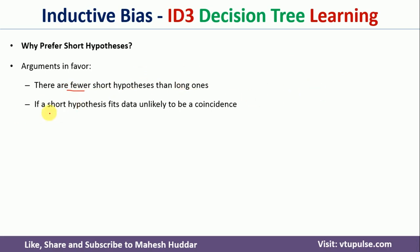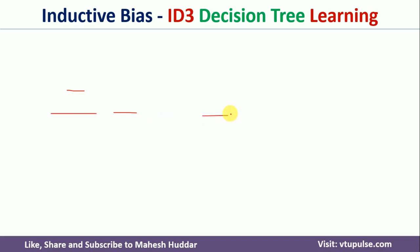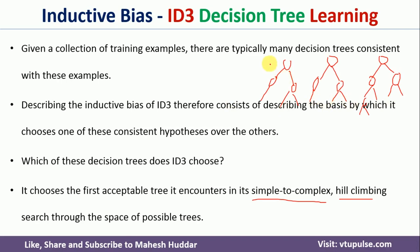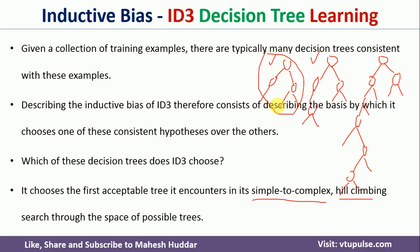The second argument is: if a short tree or short hypothesis fits the given training examples, what is the use of going with a larger tree? For example, look at these three trees — this also fits the training example, this also fits, and this also fits. But if you look at the sizes, this first one is smaller. If all of them fit the training examples, why should I go with a larger one? I should go with the first one, which has the smaller size. That is the best criteria in this particular case.